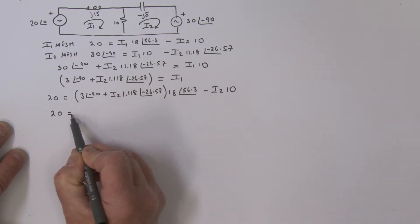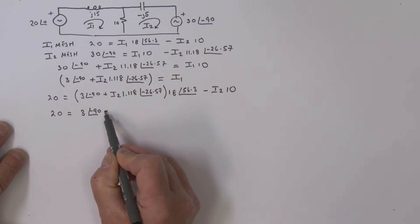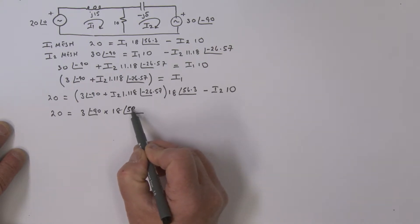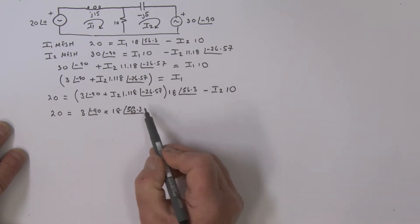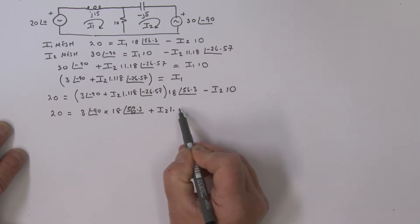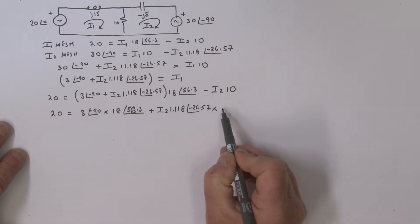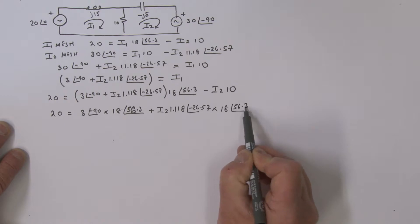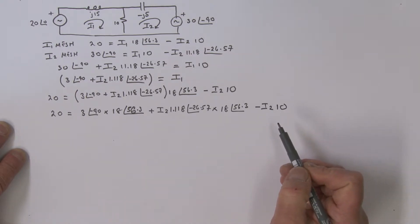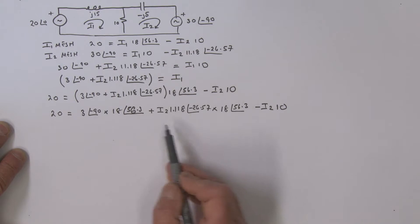Let's multiply this out to get rid of the bracket. We have 20 equal to: multiplying out, that's 3 at angle minus 90 multiplied by 18 at angle 56.3 — that's this term here — and then we've got i2 times 1.118 at angle minus 26.57, multiplied by 18 at angle 56.3, and then a minus i2 times 10. This is in polar form, which is good — we can deal with this quickly.